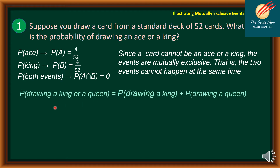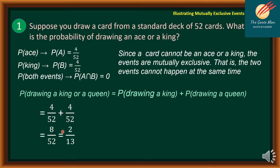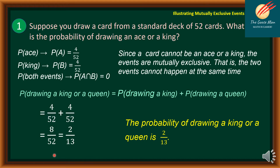Solving further, the probability of drawing a king or a queen equals the probability of drawing a king plus the probability of drawing a queen. Substituting: 4 over 52 plus 4 over 52 equals 8 over 52, or in lowest terms, 2 over 13. Therefore the probability is 2 over 13. We will express our probability as fractions for now, though it can also be expressed as a decimal or percent.